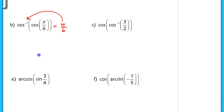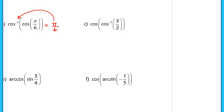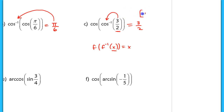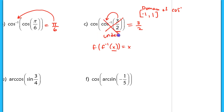In part C, we have the cosine of the inverse cosine of 3/2. Again, don't assume this equals 3/2 just because of the fundamental inverse identity that says f(f⁻¹(x)) = x. In this case, 3/2 is not within the domain of the inverse cosine function. The domain of inverse cosine is between negative 1 and 1. Since 3/2 is definitely not within that domain, this is an undefined value, and so this expression has no value.